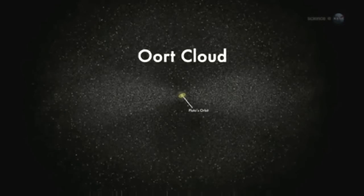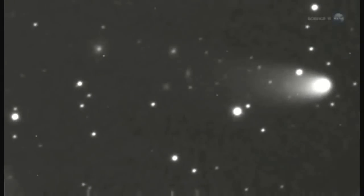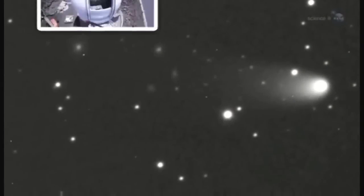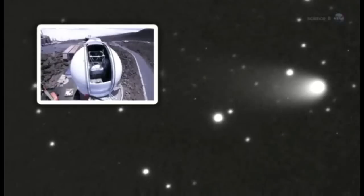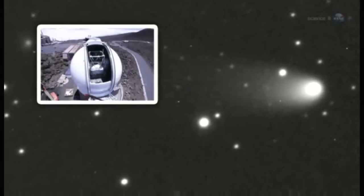One of them is heading our way now. Comet PAN-STARS was discovered by the Panoramic Survey Telescope and Rapid Response System atop the Haleakala Volcano in Hawaii.